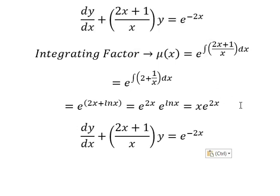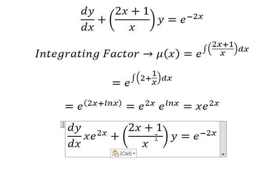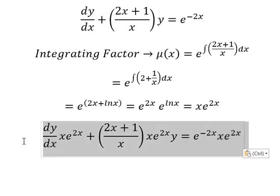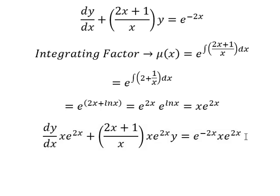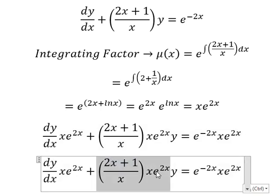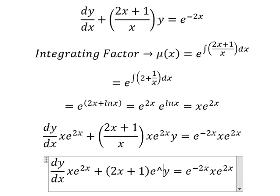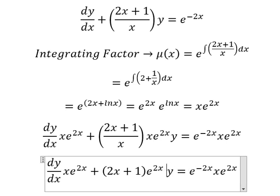That means we multiply both sides by this one. We simplify and we have (2x + 1) e^(2x) y equals... this one and this one.